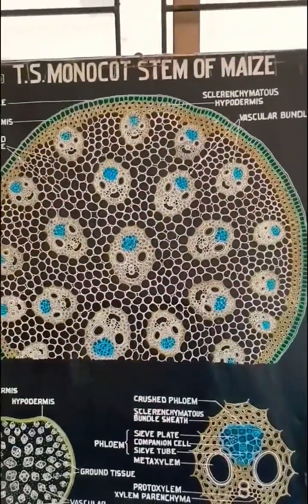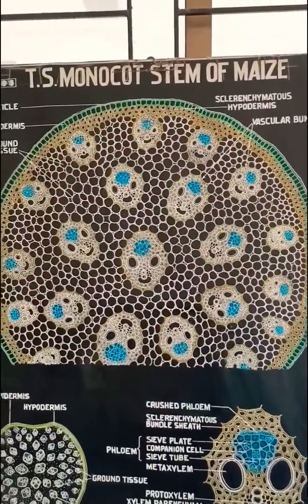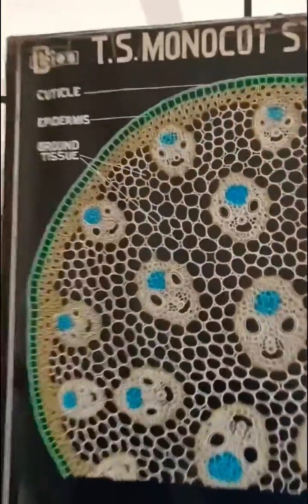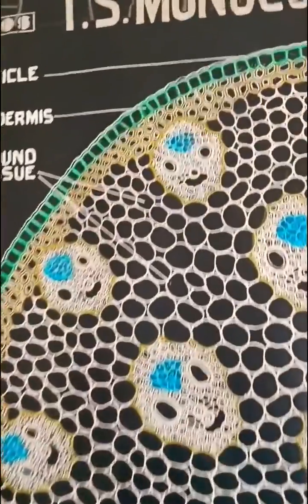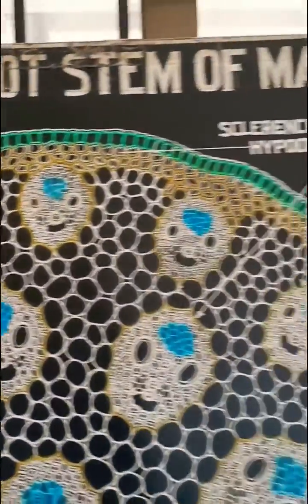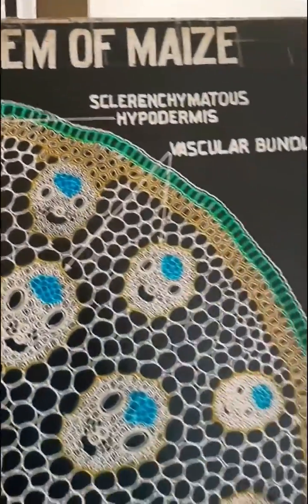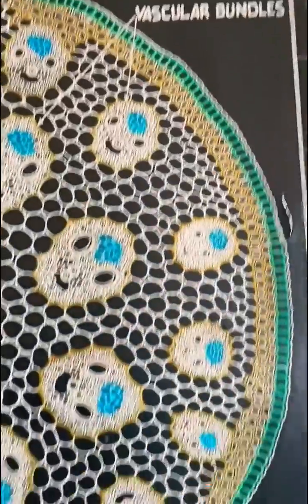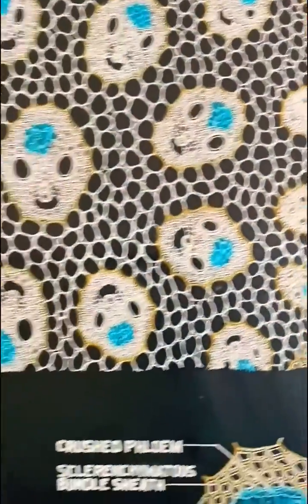Now, why is this a monocot stem? The vascular bundles are scattered. You can see — when vascular bundles are scattered, it's a monocot stem.